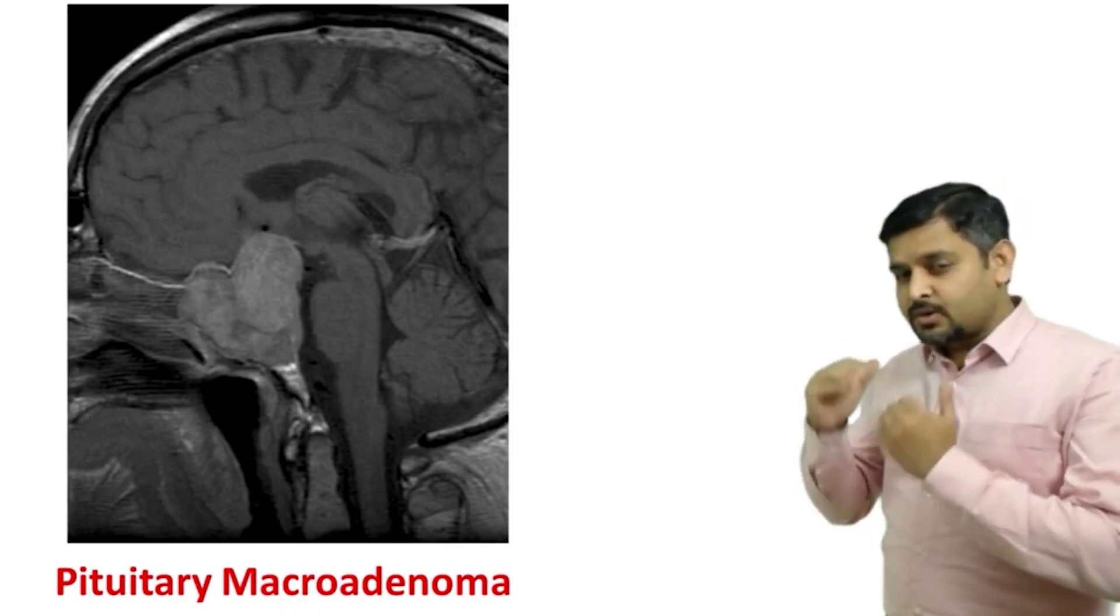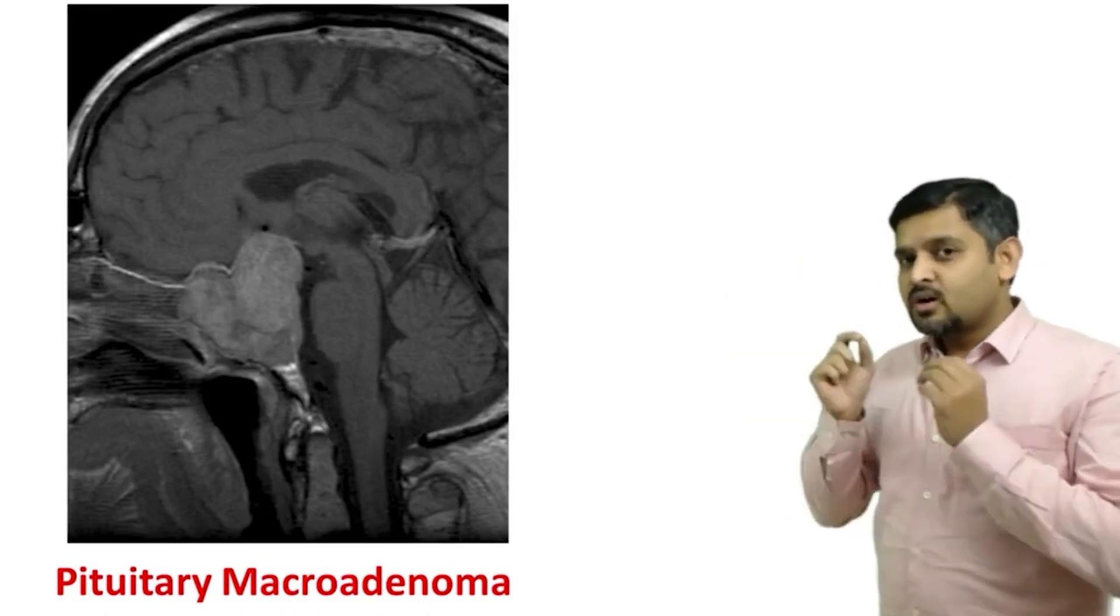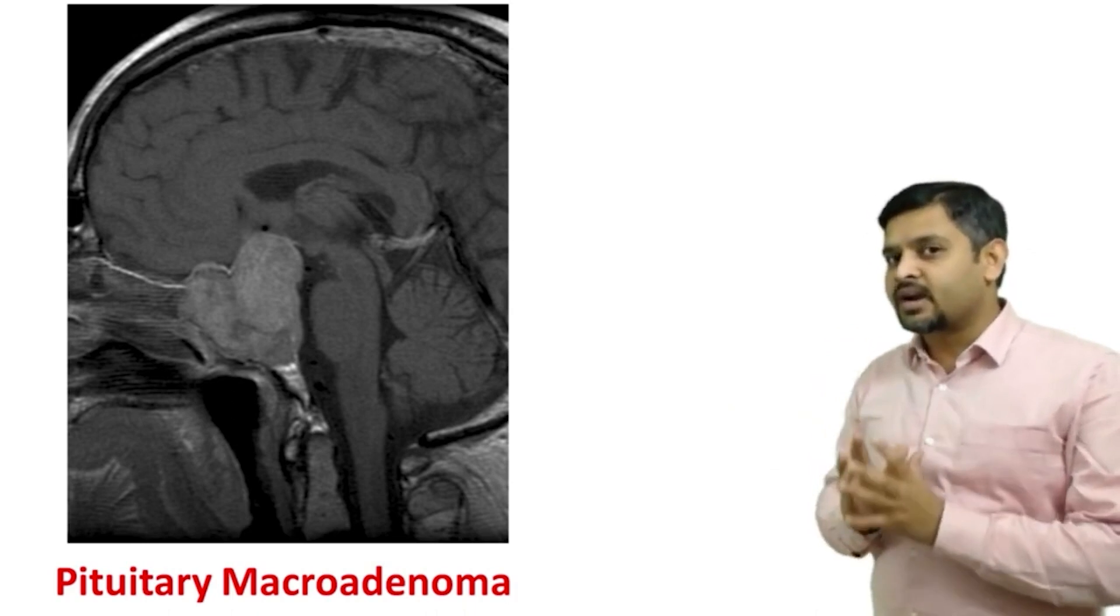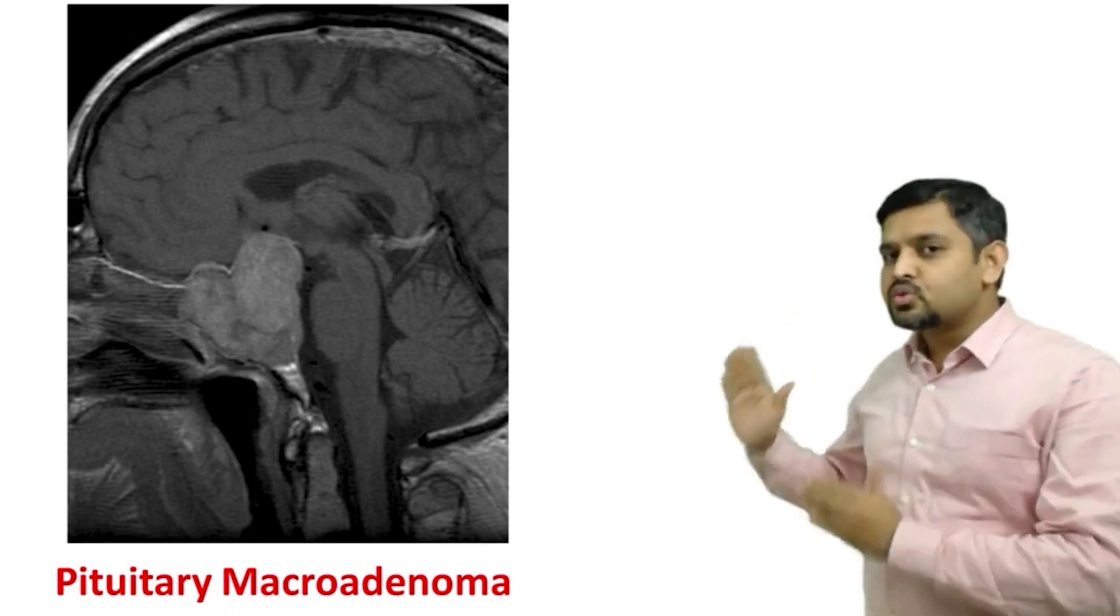However, if the mass is involving the pituitary and going into the suprasellar location, more than 1 cm, with a typical snowman shape or figure of 8 appearance, think of pituitary macroadenoma.